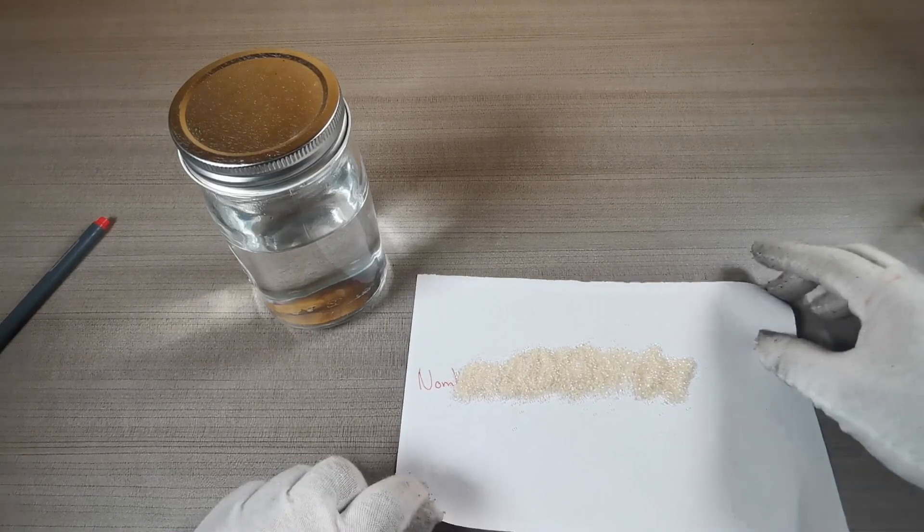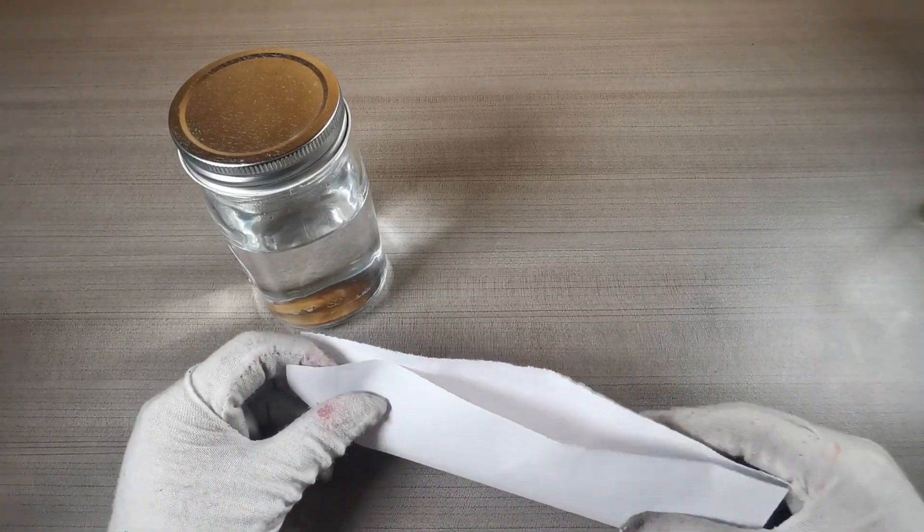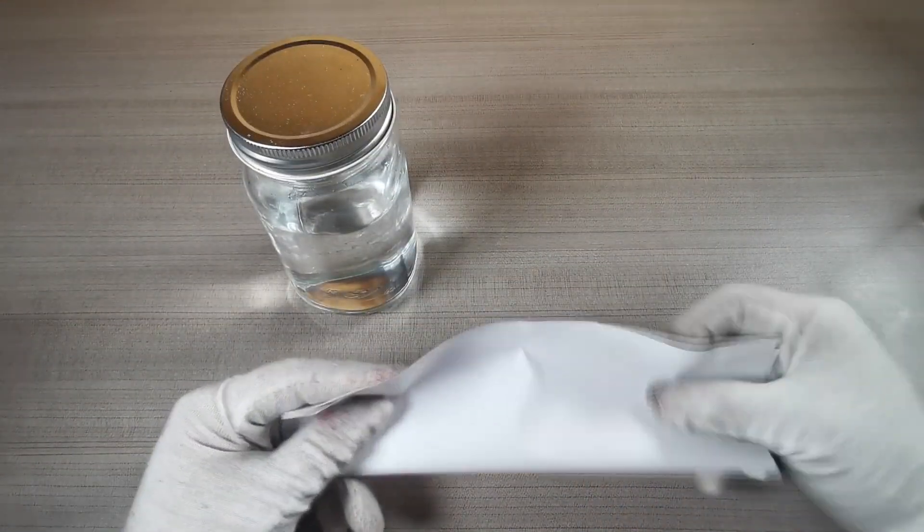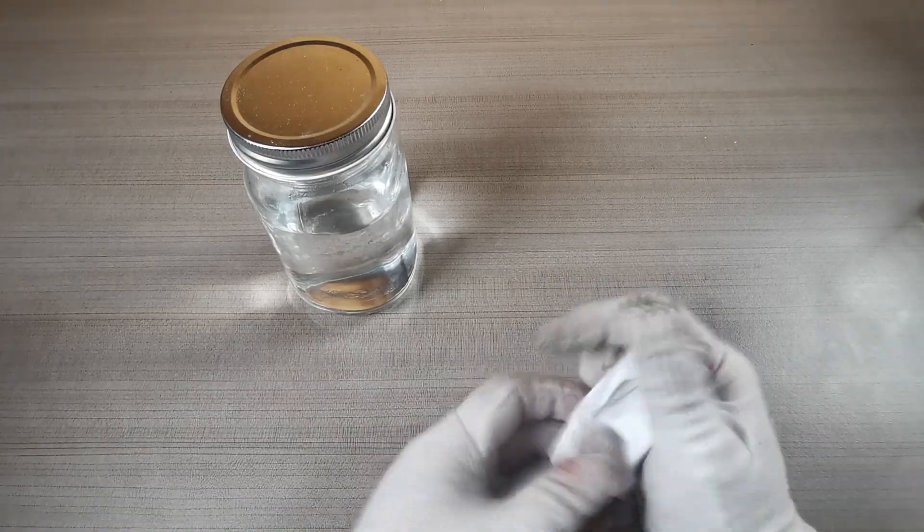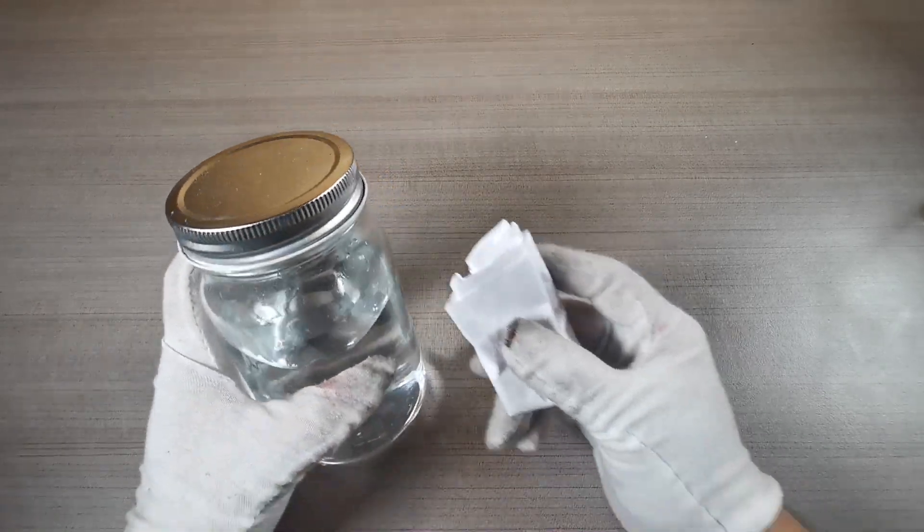Hecho esto dobla la hoja teniendo mucho cuidado de no tirar el azúcar. Si lo tiras tendrás que repetir el hechizo. Introduce este papel en el frasco con tu orina y ciérralo completamente.